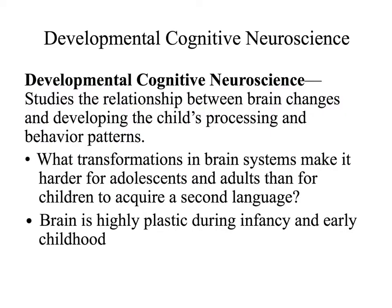Neuroscience is the scientific study of the nervous system — that is, the brain and the spinal cord. When we look at developmental cognitive neuroscience, we are basically looking at the way our cognition changes as we grow and as a byproduct of our maturation of the brain. This field studies the relationship between brain changes and the way a child's growth impacts behavior patterns.